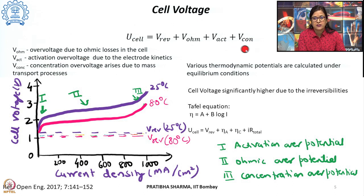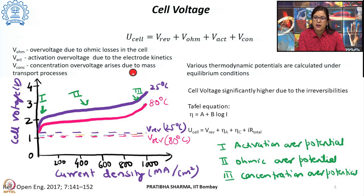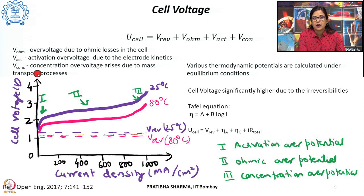The last component is the concentration overvoltage, which arises because of mass transport limitations in the electrolytic cell. If the concentration of products formed is higher than that of reactants at the interface — meaning products are not removed at the pace at which reactants reach the interface — then concentration overvoltage results.